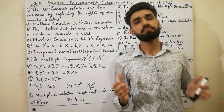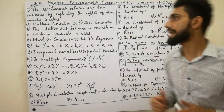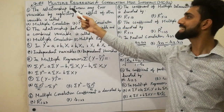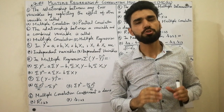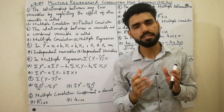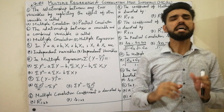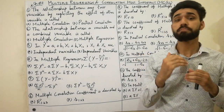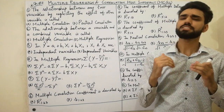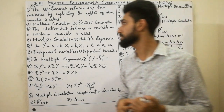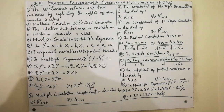Assalamu alaikum friends, today I am here to explain the most important MCQs of chapter 11, multiple regression and correlation by book Sher Mohammed Choudhury. These MCQs are very important for all universities, and I will tell the reason for each MCQ and explain them, so must watch this video till the end to get more concepts.